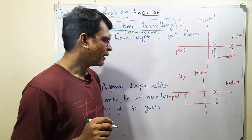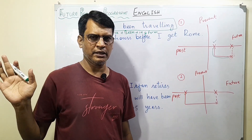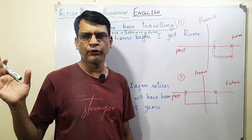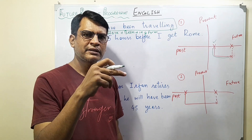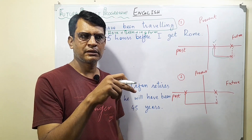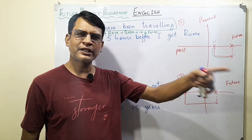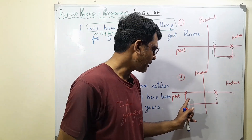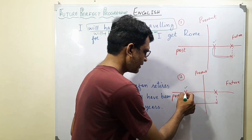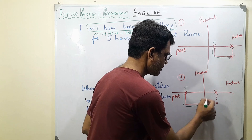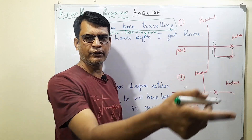That is one variation. The other variation is when an action started in the past — like 30, 40, or 50 years back — and then it continued and it is here at the present moment, and then it will continue a little bit more into the future. So we have an action in the past continuing until the present moment and then further into the future.